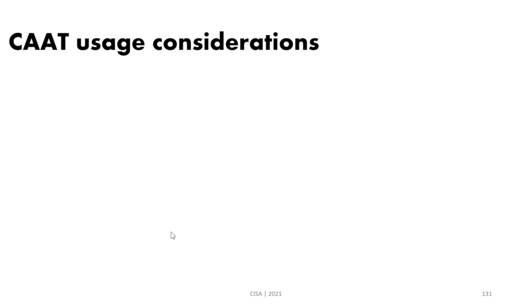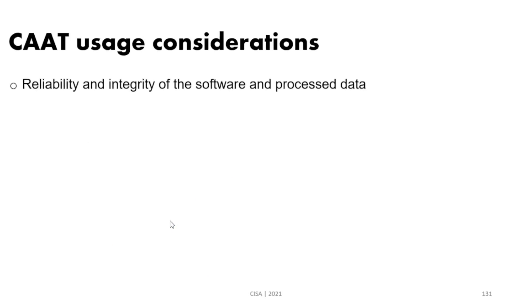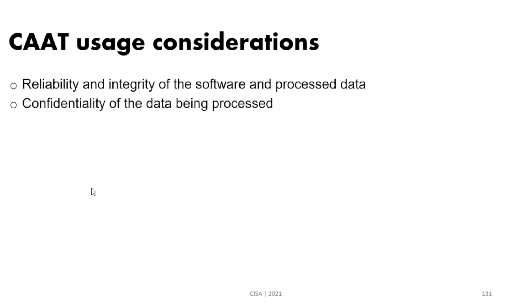All of these tools can be used, but with important considerations. You need to consider the reliability and integrity of the software, since it will be used to access production or test data. You need to ensure the software is reliable and that integrity is preserved while processing data. Confidentiality of the data is also a concern — you need to use approved, reliable software to ensure it preserves the confidentiality of data being processed.